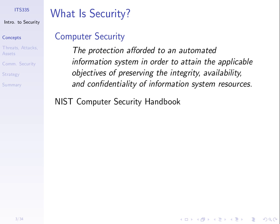For some information system or general computer system, we have objectives of preserving integrity, availability and confidentiality of information system resources. Our computer system has a set of resources that we want to protect, and the protection should preserve integrity, availability and confidentiality. We need to talk about what those three are to make sense of that.